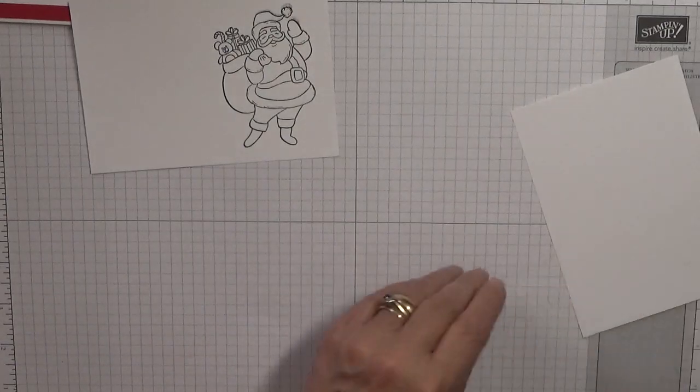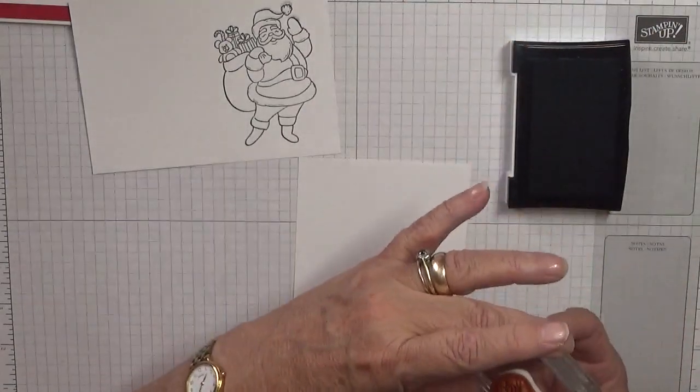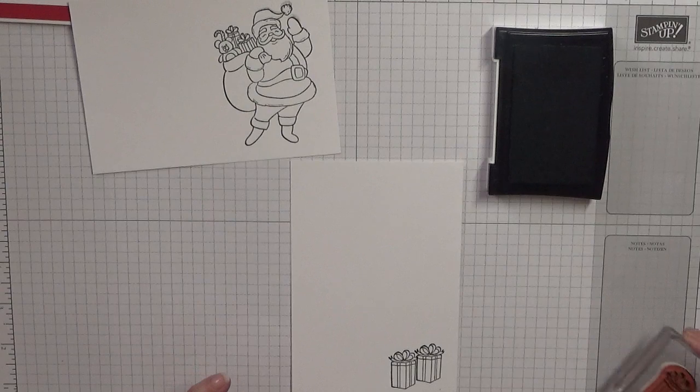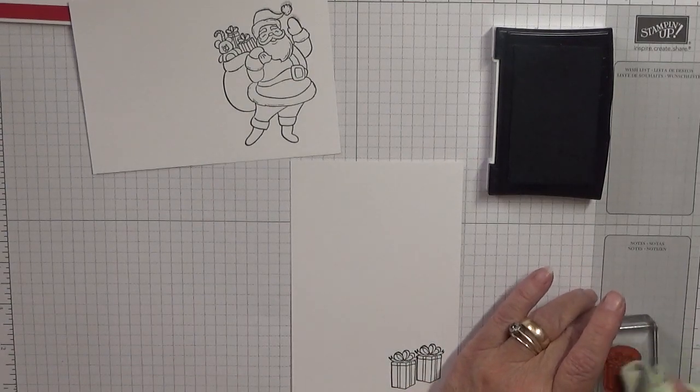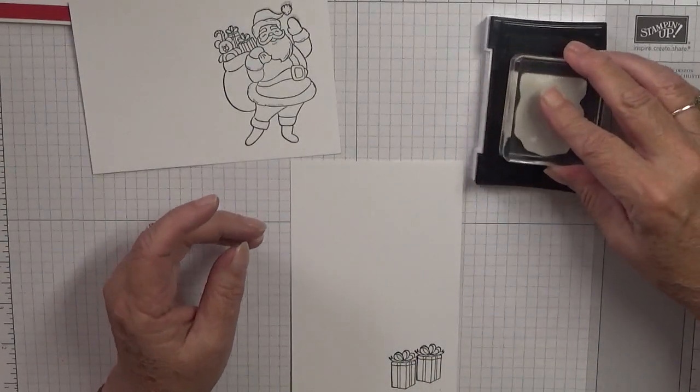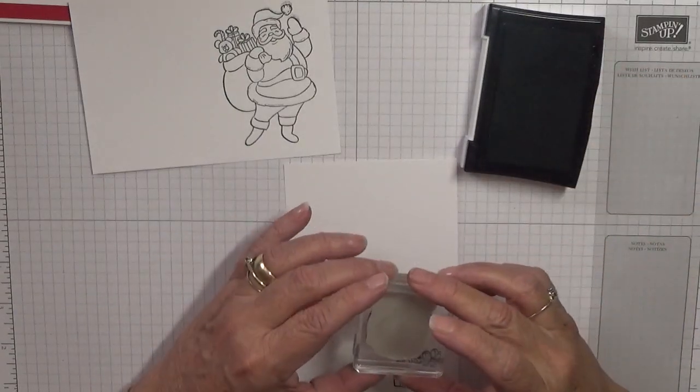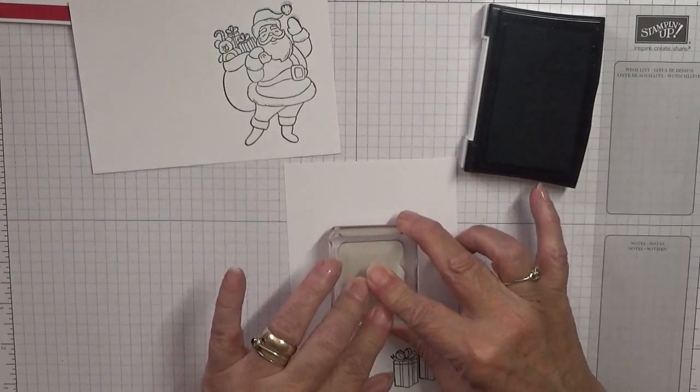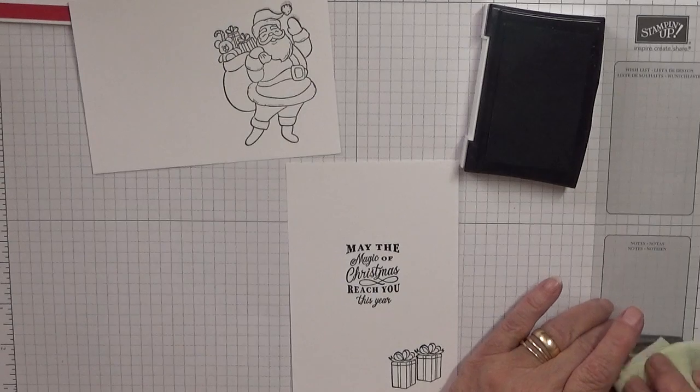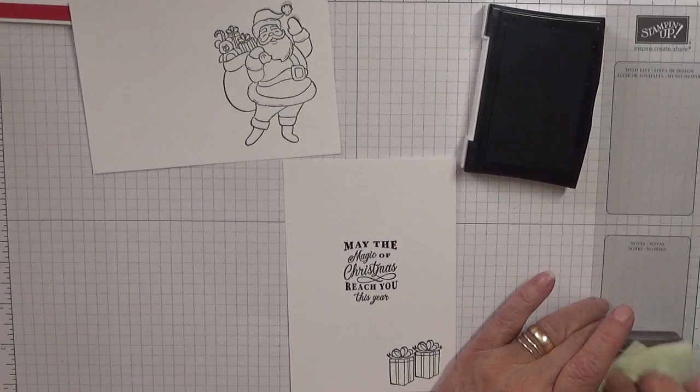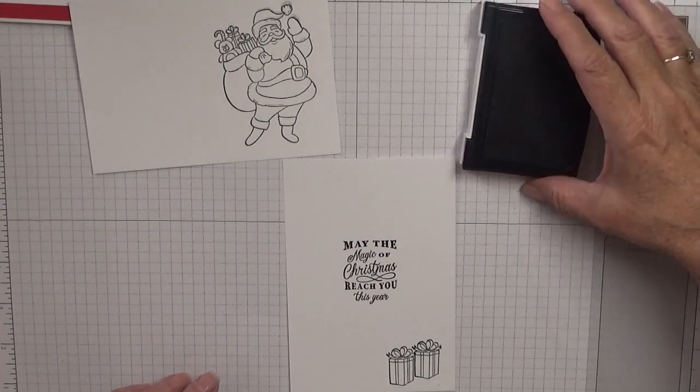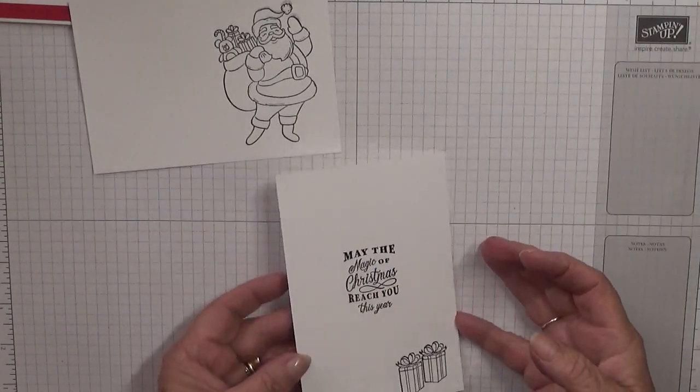I've got the parcels here. I'm going to put a parcel there and a parcel right next to it. Then with the sentiment 'may the magic of Christmas reach you this year,' I'm going to put that in the middle and just pray it's straight. That's our stamping done.